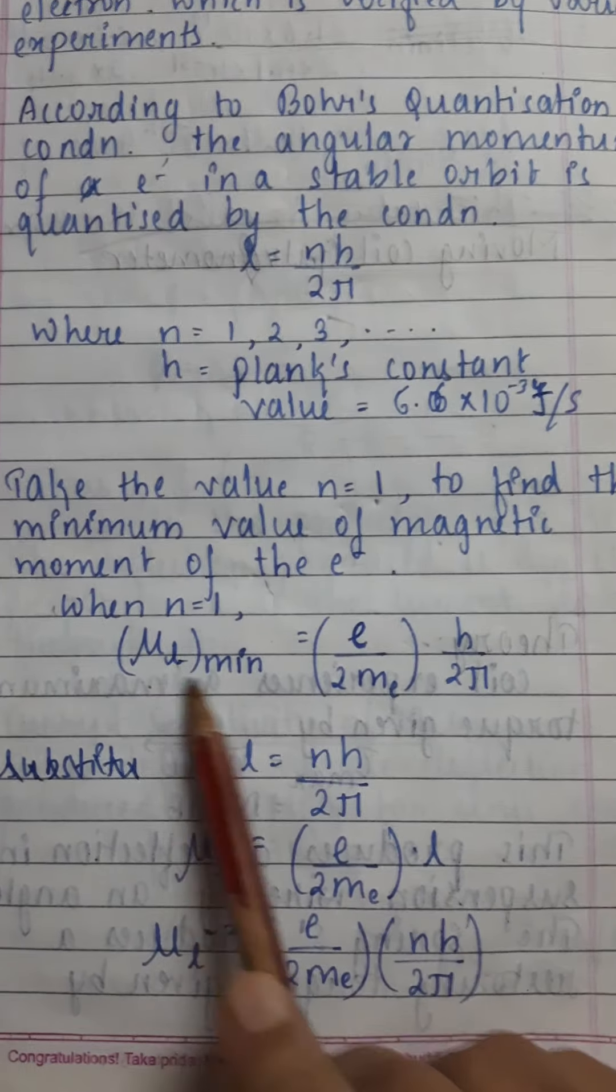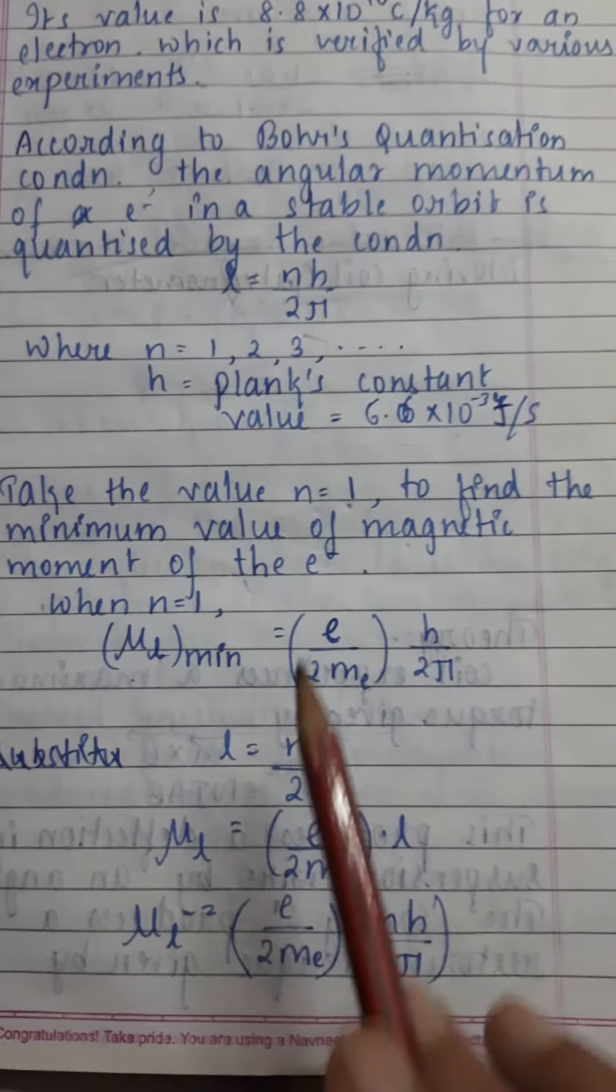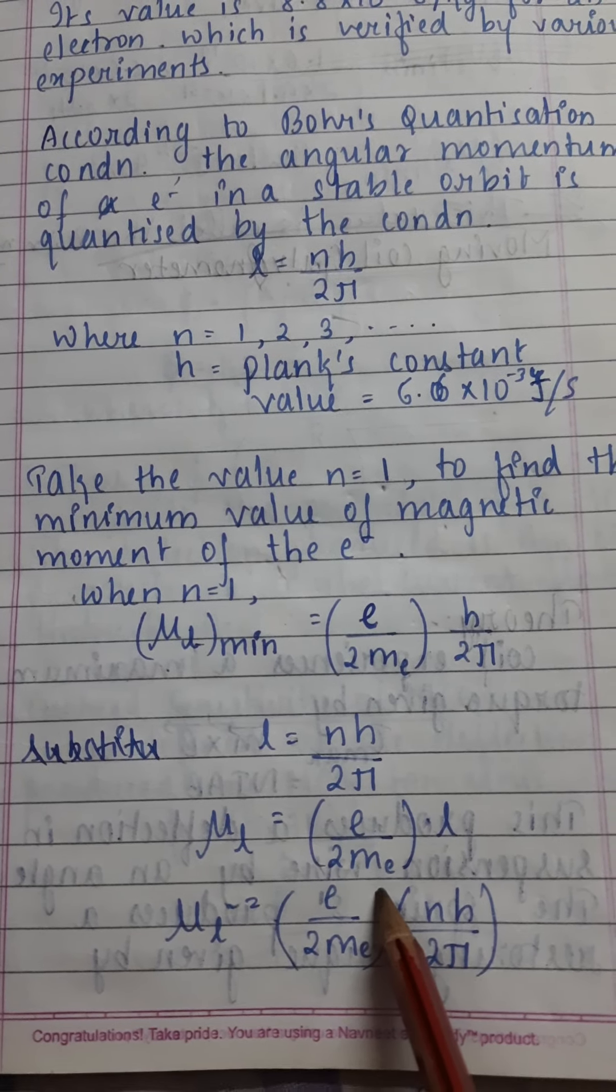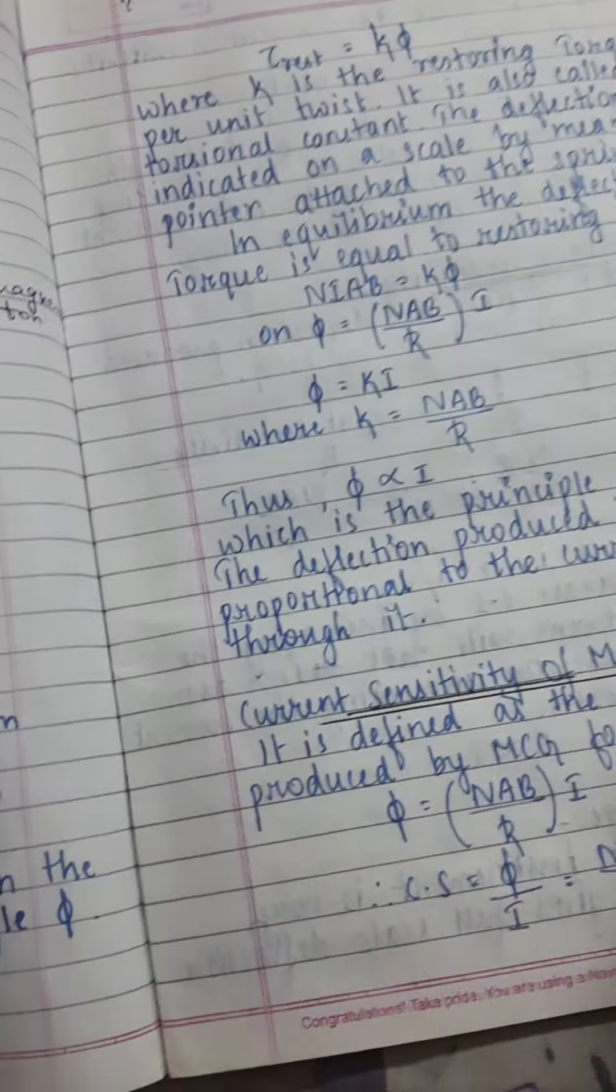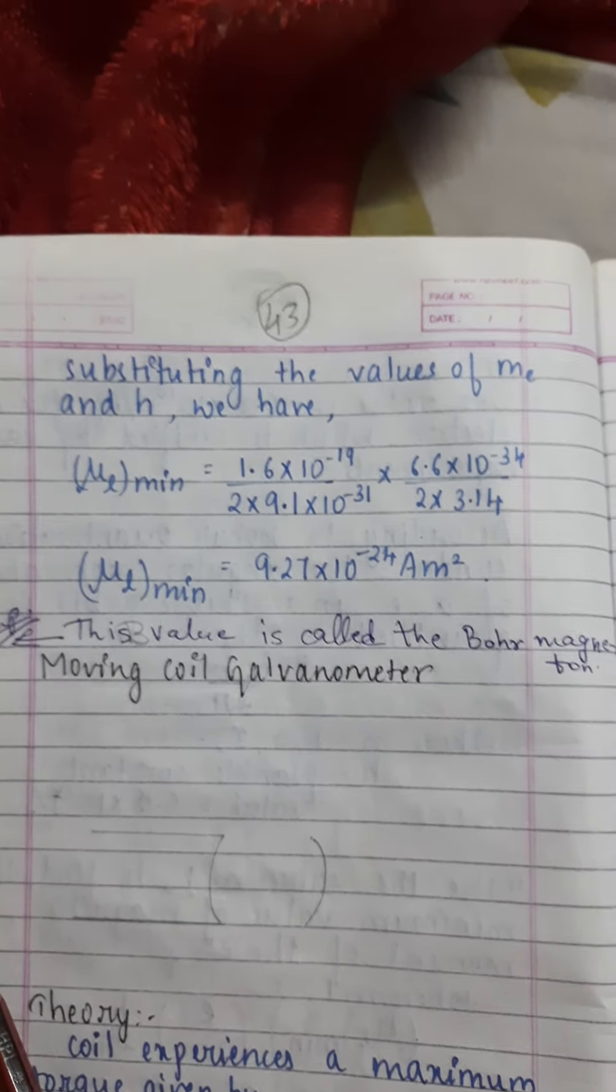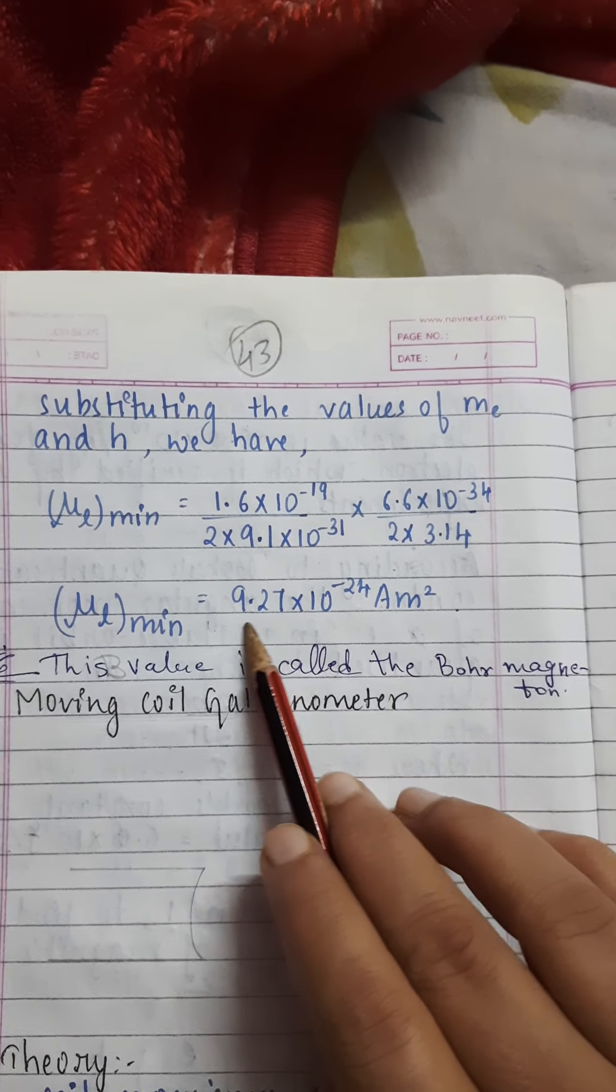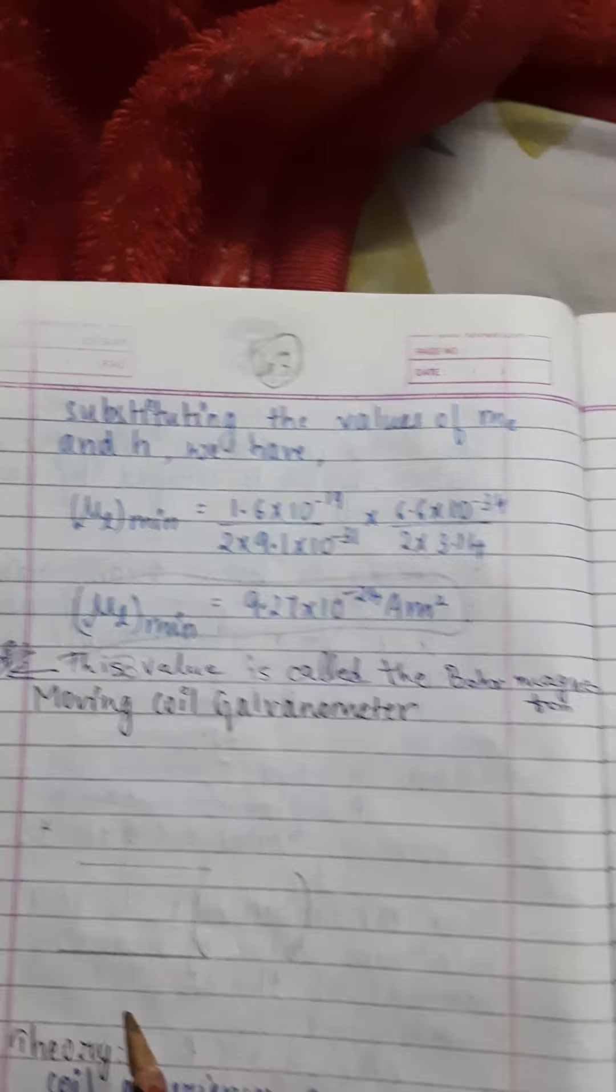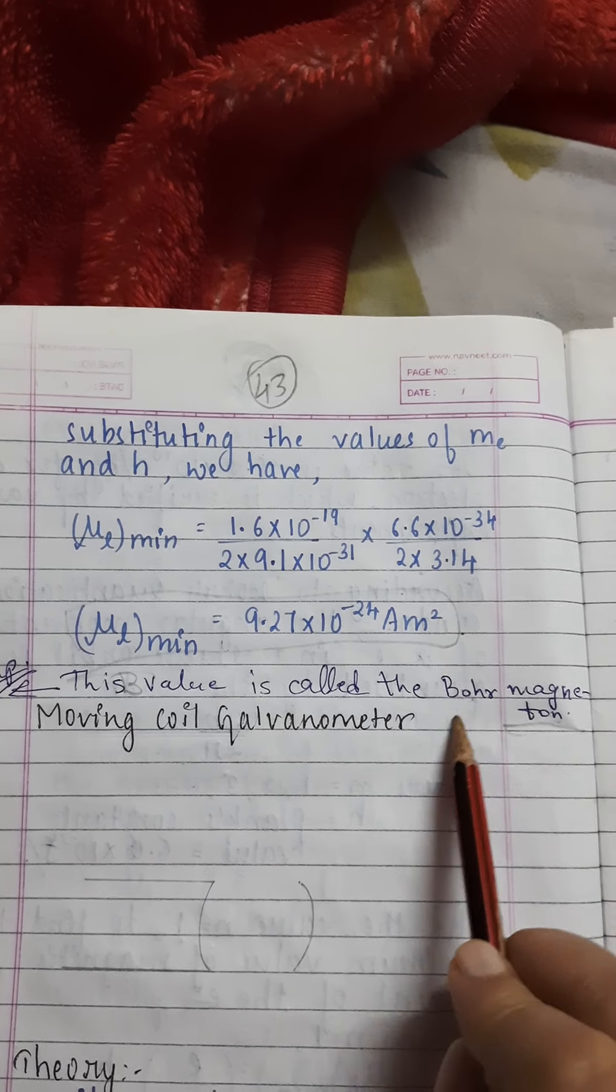Substituting the values with n equals 1, the formula becomes μl equals e/(2me) times h/(2π). This gives us eh/(4πme), which is the minimum value of Bohr's magnetic moment of electron. This value is called Bohr magneton. Bohr magneton is important to remember - this question comes in exams every year.